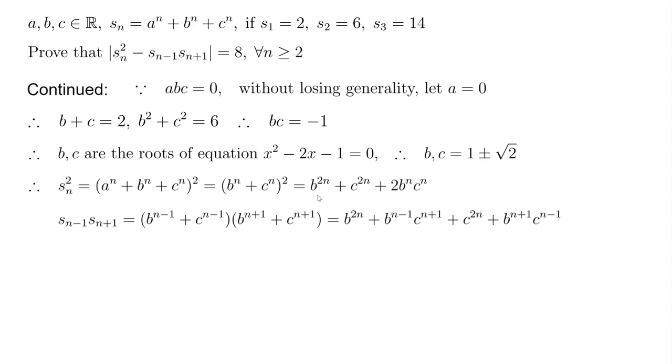And similarly, you can get this for s_{n-1} times s_{n+1}. Notice that both of these contain b^{2n} and c^{2n}. We can cross them out. So the difference between the two is just 2(bc)^n minus, so those two we can actually factor out b^{n-1} times c^{n-1}, which is just (bc)^{n-1}. And what's left is c^2 and b^2 here. Now you realize that the target expression only needs you to know the value of bc and b^2 + c^2.